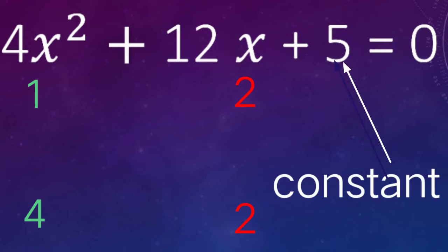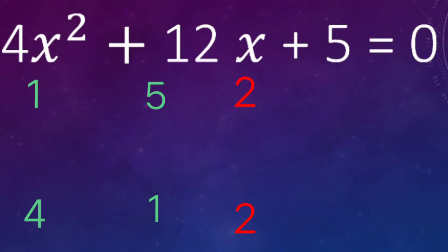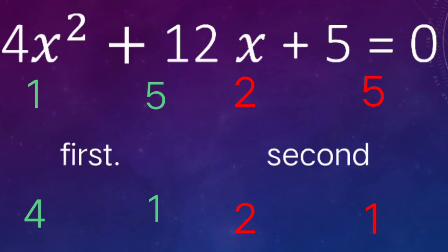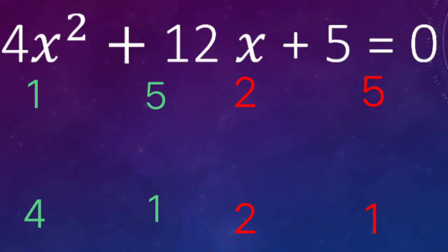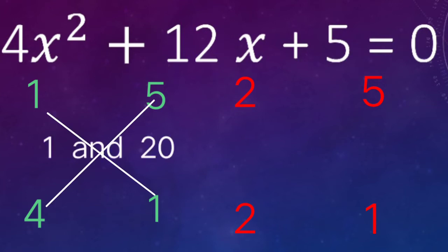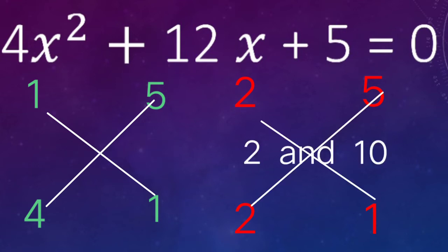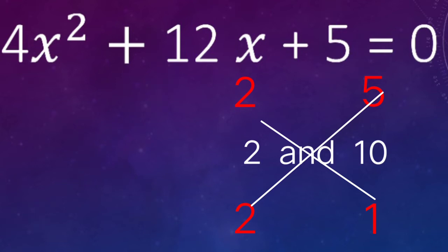Now we look at the constant, which is 5. We can write it as 1 above and 5 down, or 5 above and 1 down. We have two cases: (1, 4) with (5, 1), and (2, 2) with (5, 1). Check by cross multiplication: 1×1=1, 5×4=20 — 20 and 1 cannot make 12. In the second case, 2×1=2 and 5×2=10 — 10 and 2 make 12 easily.